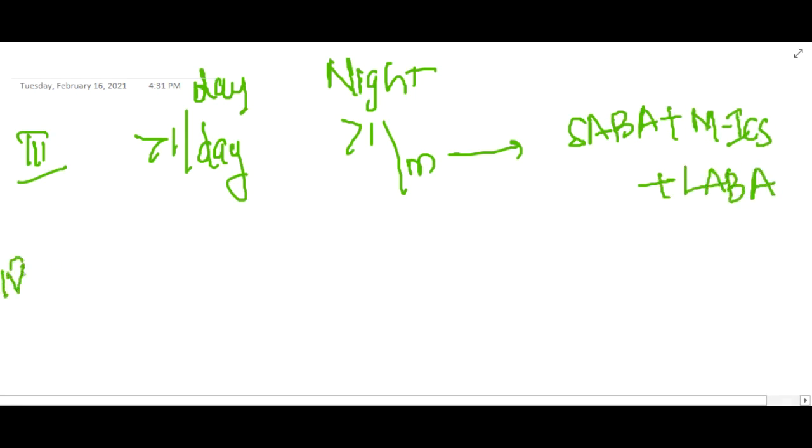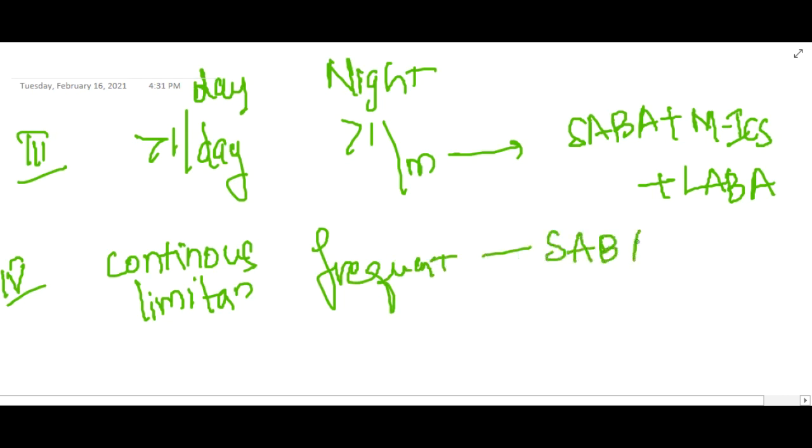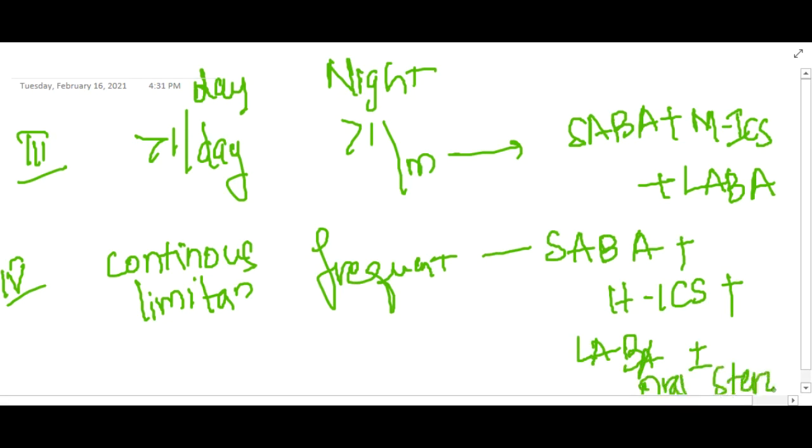Then in stage four, here if there is continuous limitation of physical activity is seen in the days and even nighttime, also if the episodes are frequent, in such cases we give short-acting bronchial agonists with high dose of inhaled corticosteroids plus long-acting bronchial agonists plus or minus oral steroids. This is for the treatment of bronchial asthma. Thank you for watching.